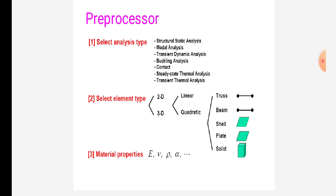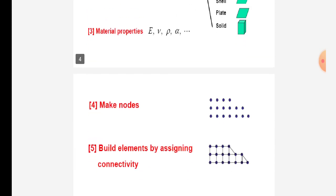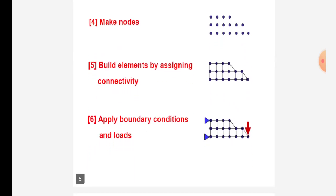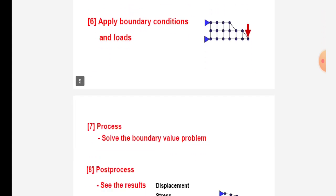Next, we use material properties like energy, density, different material properties. Then, we find nodes. After then, we build, assign connectivity. Also, next, we apply boundary conditions and loads.